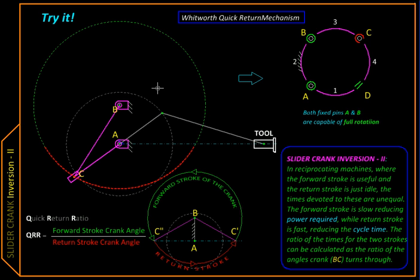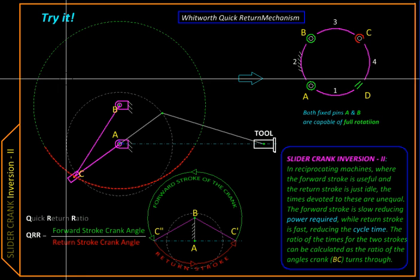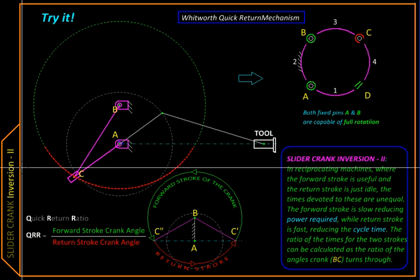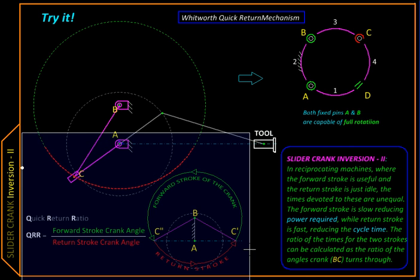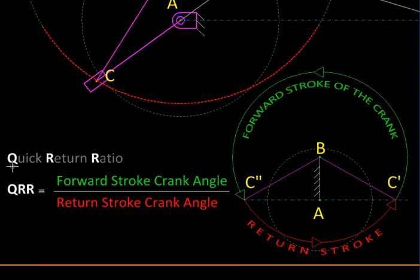Such mechanisms are commonly used in machine tools where the tool does something useful in a cycle and then the rest of the cycle is finished quickly, where the tool is just brought back to the initial position. This quick return characteristic of a mechanism can be quantified using a ratio called the quick return ratio.